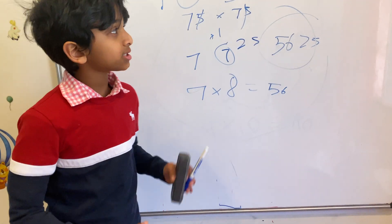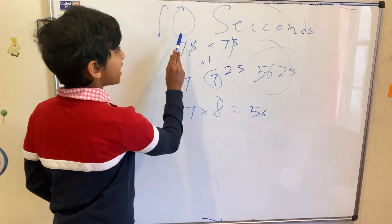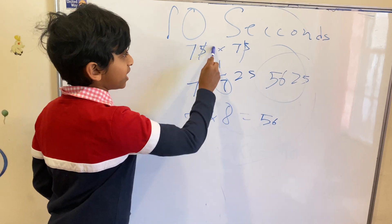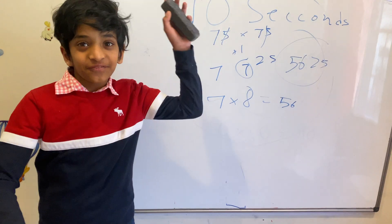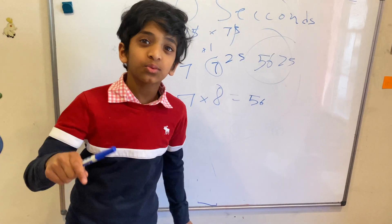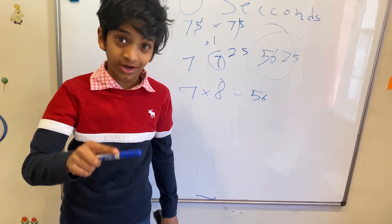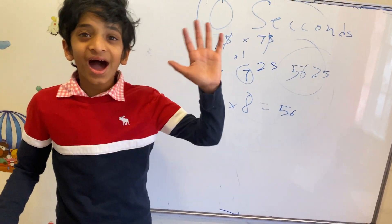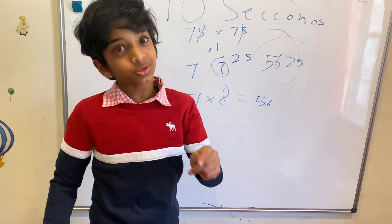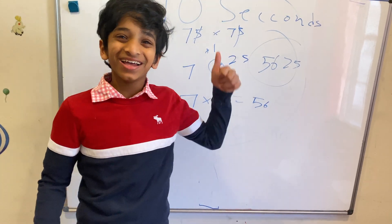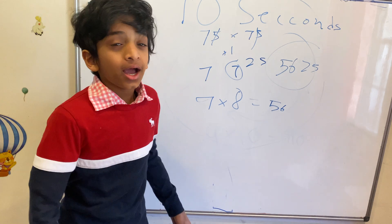This trick only applies for square of any two-digit number that ends with a 5. If we get a thousand likes, the next one will be very fun. Even if we don't get thousand likes, the next one's going to still be very fun. Bye guys.